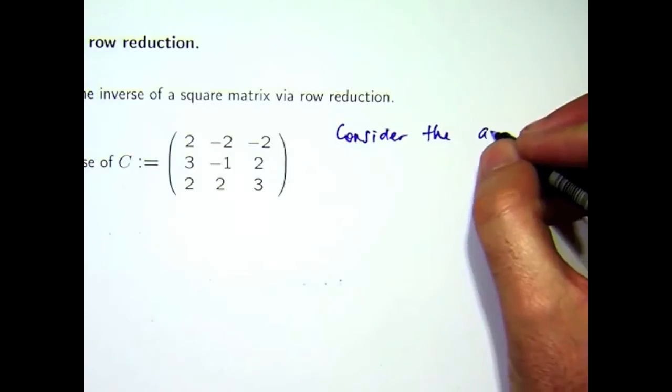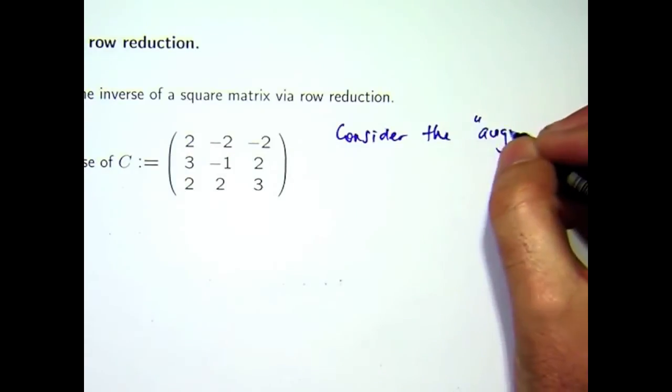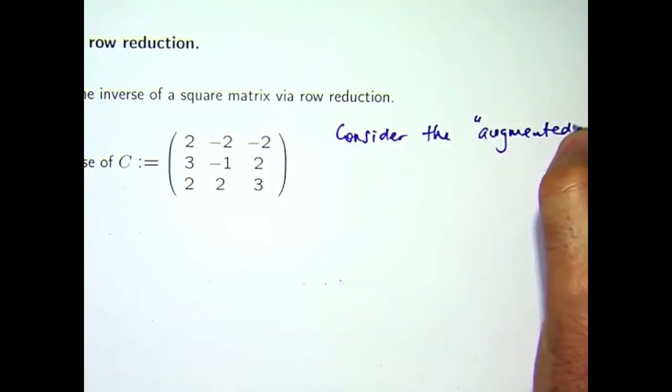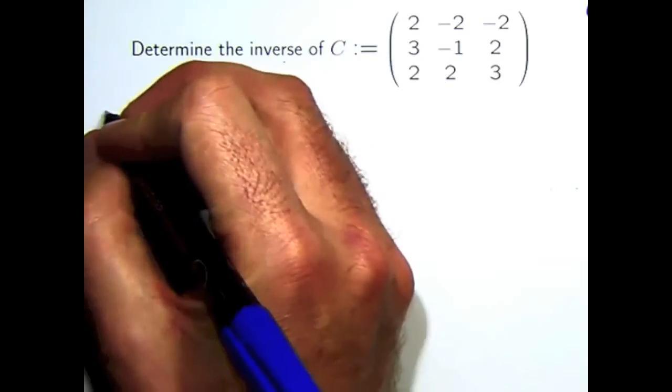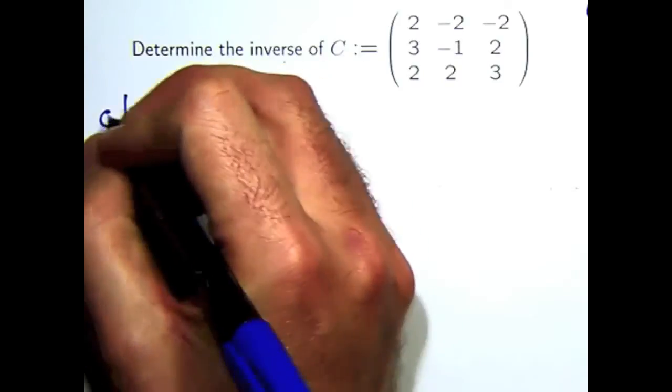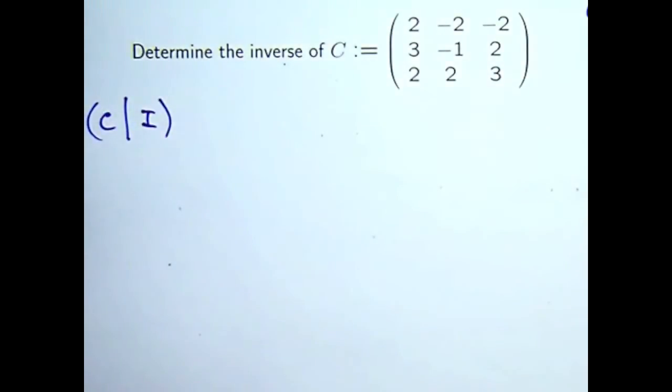Consider the augmented matrix C augmented with the identity matrix. So C, and then next to it on the right is the identity matrix.